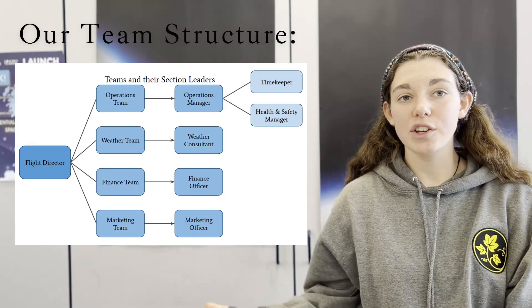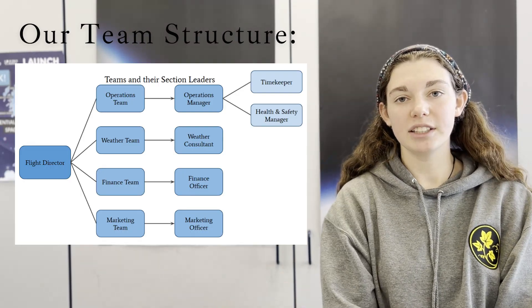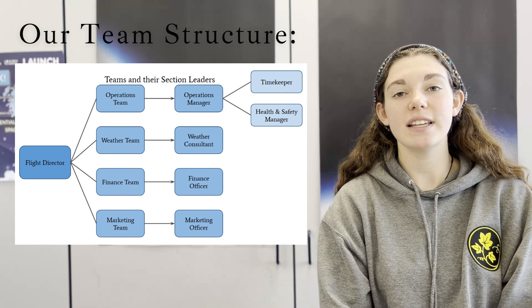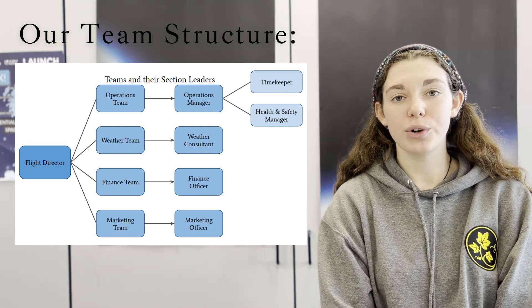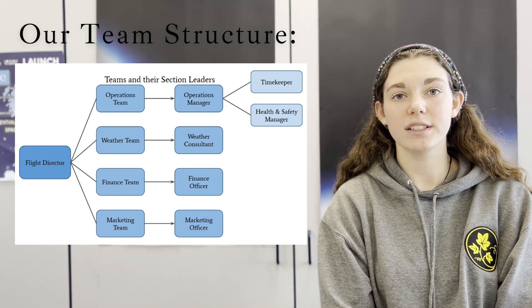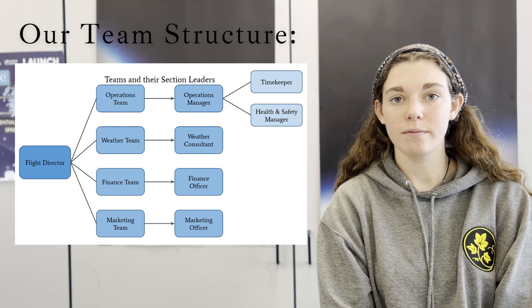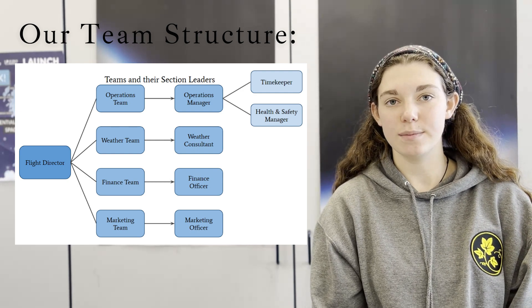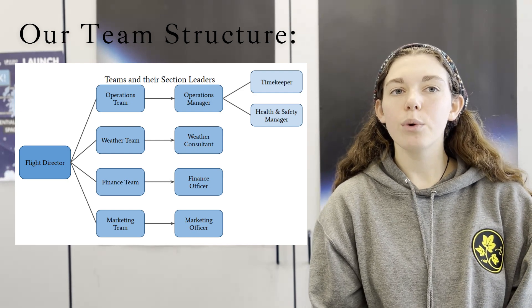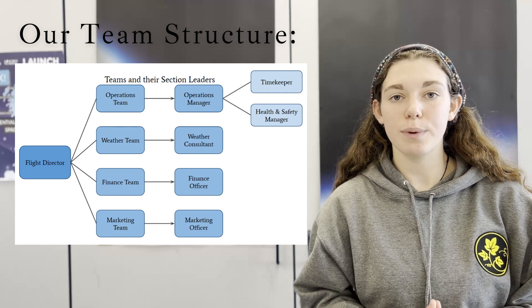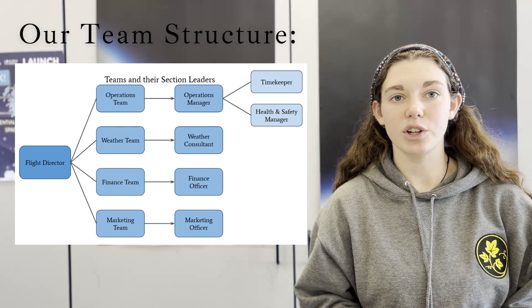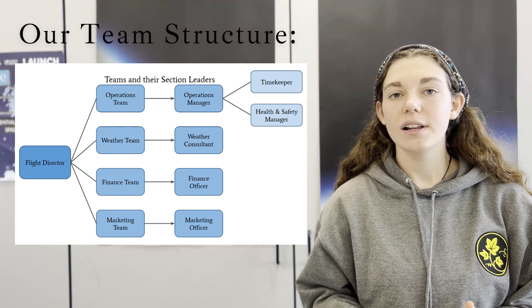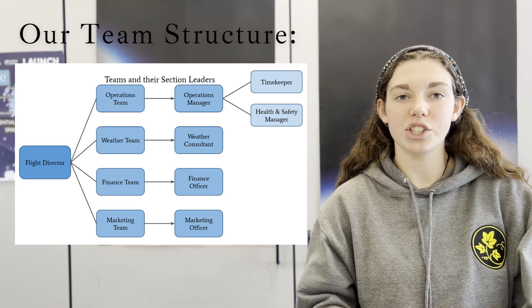To start with, we designed a team structure. As you can see here, we have a flight director who oversees everything. They make sure that the team works effectively and efficiently. From there we have section leaders and their teams. We will go into more detail about how each person completes their jobs later on, but for now let's introduce each team.